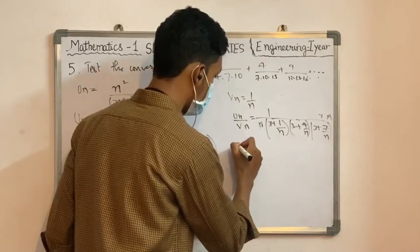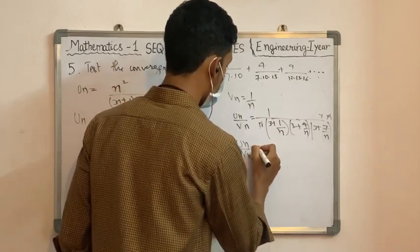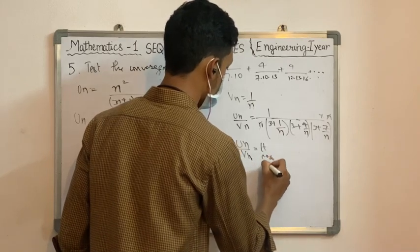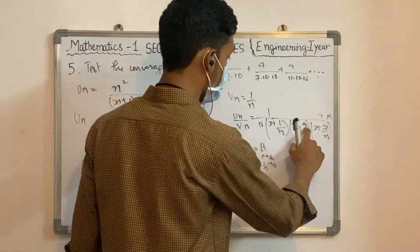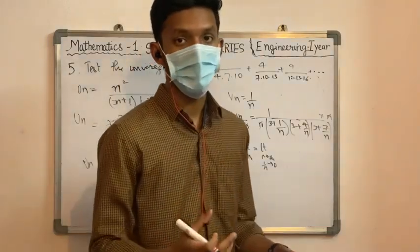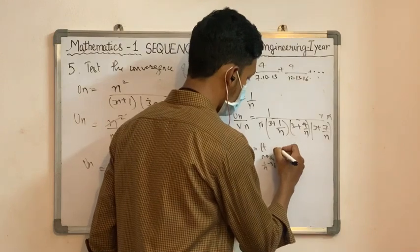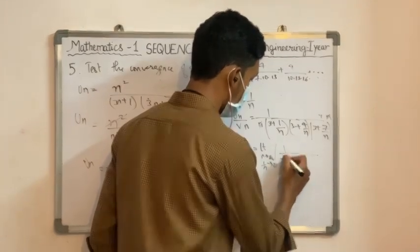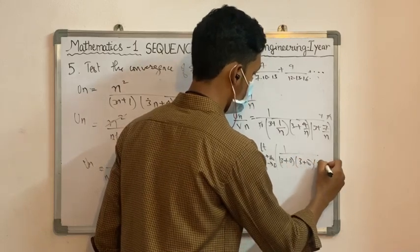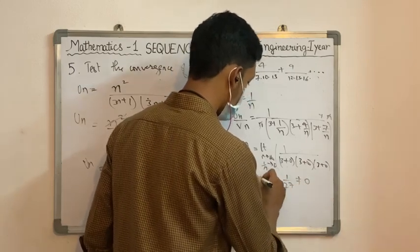Taking the limit as n tends to infinity of Un/Vn: since 1/n, 4/n, and 7/n all tend to 0 as n→∞, we get (3+0)×(3+0)×(3+0) = 27 in the denominator. So the limit equals 1/27, which is not equal to 0.